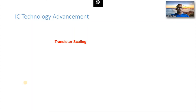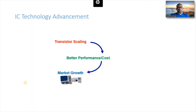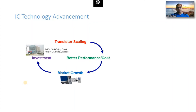You get more functionality available at your hands. When you scale the transistor, you get better performance and your cost is also reduced. When cost is reduced, more people use the technology, and when more people use it you get money and invest it for further R&D. Further research and development leads to further transistor scaling — so this loop is continuously rotating.